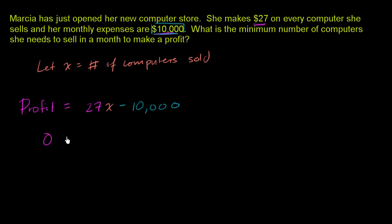Break even, that's zero profit, neither positive or negative, is equal to 27x minus 10,000. Well, we've seen equations like this before. We can add 10,000 to both sides so it's no longer on the right-hand side. And we are left with 10,000 is equal to 27x.